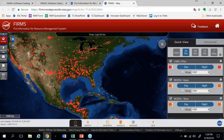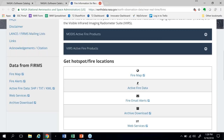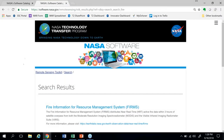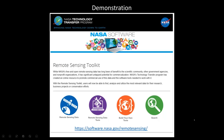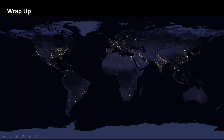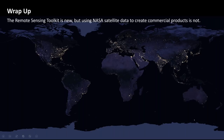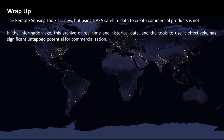With that, that'll be the end of the demos, and we'll go back to the presentation. So just to wrap up — the Remote Sensing Toolkit is new, but using NASA science satellite data to create commercial products certainly is not. In this information age, this enormous archive of both real-time and historical data, as well as the tools to use it effectively, has significant untapped potential for commercialization. We hope that some of you will explore those opportunities.